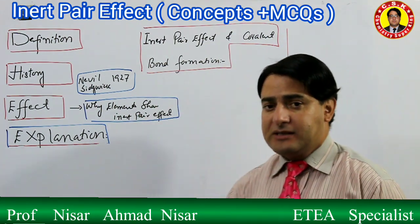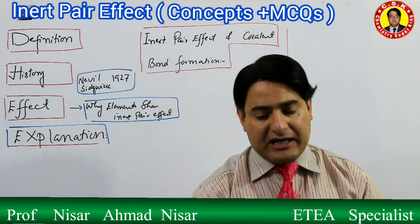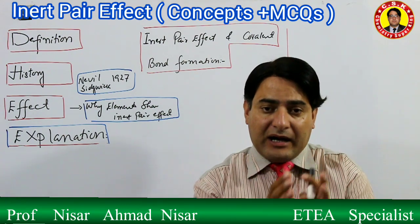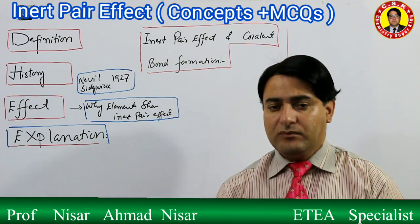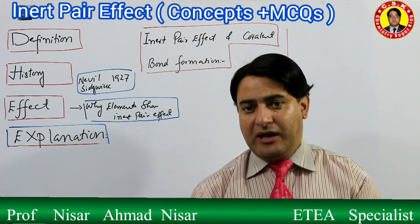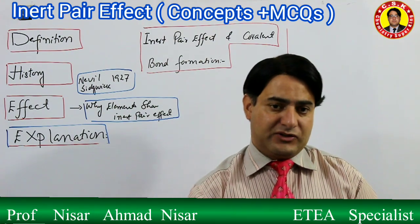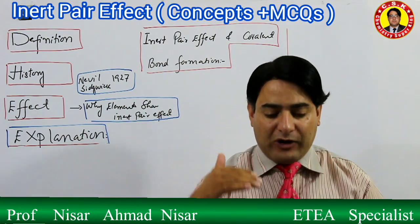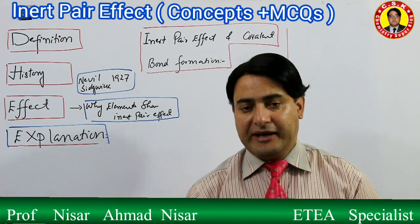Now let's talk about today's topic. First we will define it: what is the Inert Pair Effect? Inert Pair Effect means the effect of a non-bonding pair. The definition is: the tendency of electrons in the outermost s-orbital to remain unionized, to remain unused during bond formation in a compound is called the Inert Pair Effect.